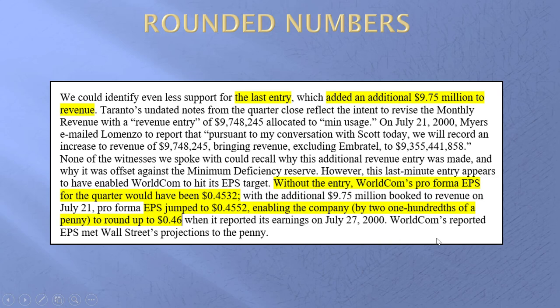Rounded numbers — this is still WorldCom. We can identify even less support for the last entry, which added $9.75 million to revenue. Without the entry, pro-forma earnings per share would have been $0.4532. We would round it down and report earnings per share of $0.45. With the additional $9.75 million, earnings jumped to $0.4552. But now we can round up to $0.46, which met Wall Street's projections to the penny. So here we are playing games with rounded numbers.